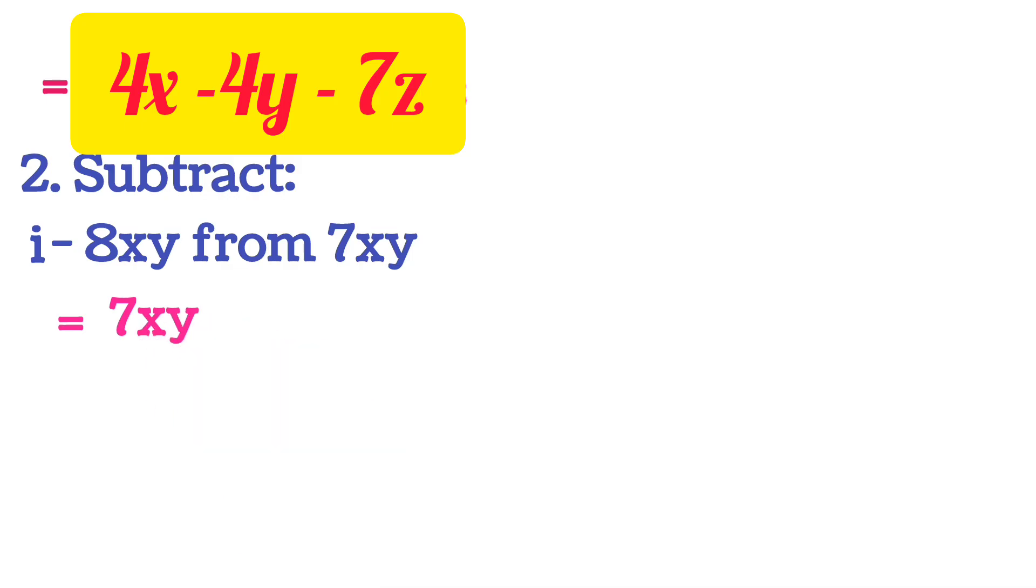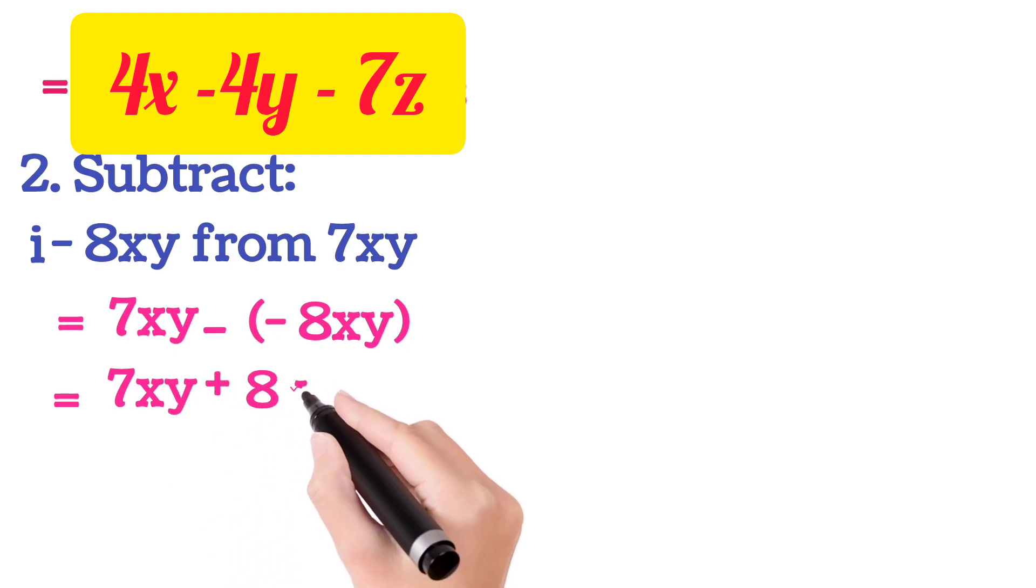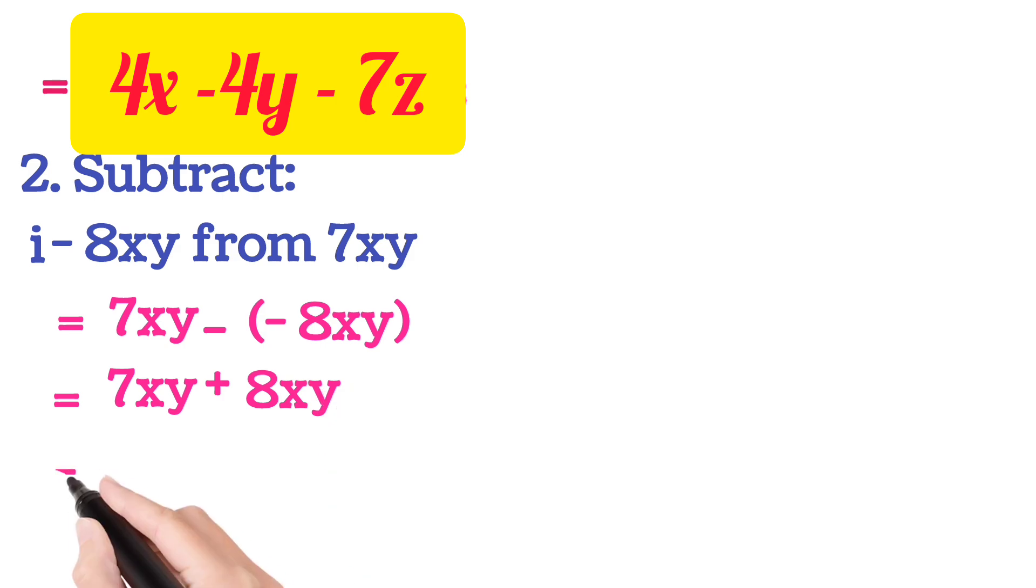Question number 1: We will subtract minus 8XY from 7XY. So first what we will write: 7XY minus and minus 8XY we will keep inside the bracket. Now next step: 7XY minus minus equals plus 8XY. Now both the terms are positive, so you do plus. So 7 plus 8, 15XY is our answer.